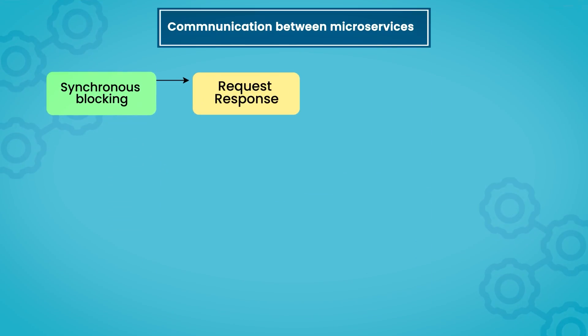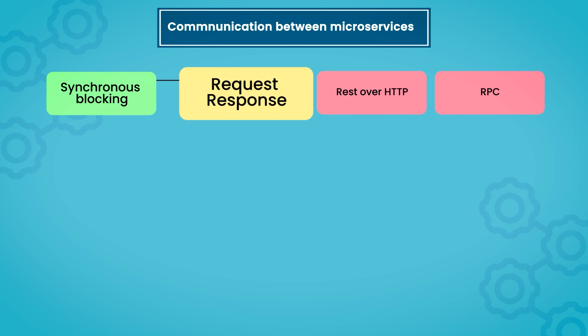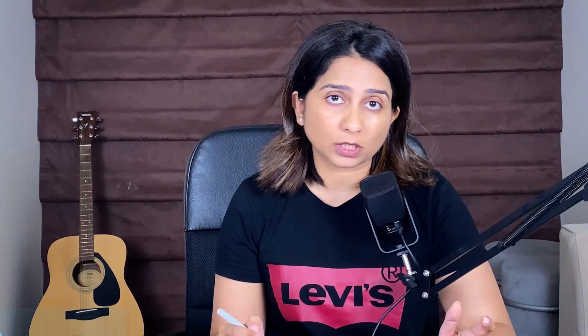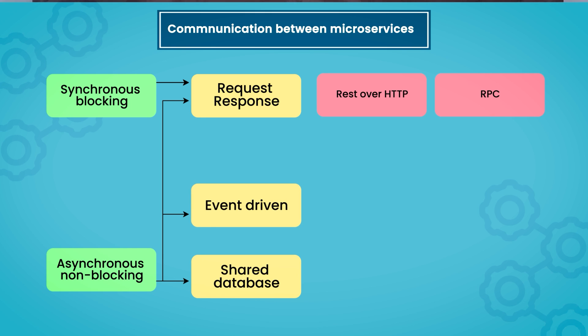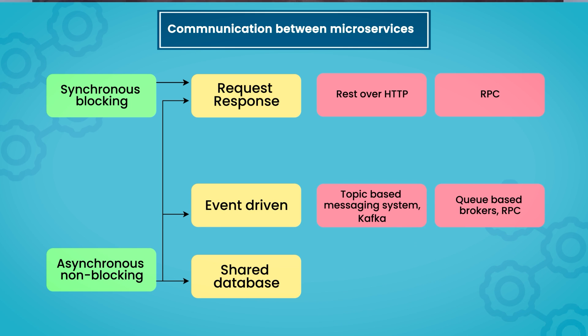For synchronous blocking communication, we have the request-response type of implementation, which is implemented via REST over HTTP or RPC. This request-response type can also be used to implement asynchronous non-blocking calls. For other asynchronous non-blocking calls, we have methods such as event-driven methods or shared databases. Event-driven methods can be implemented using topic-based or queue-based messaging systems, as well as RPC. For shared databases, you rely on two databases or file systems.